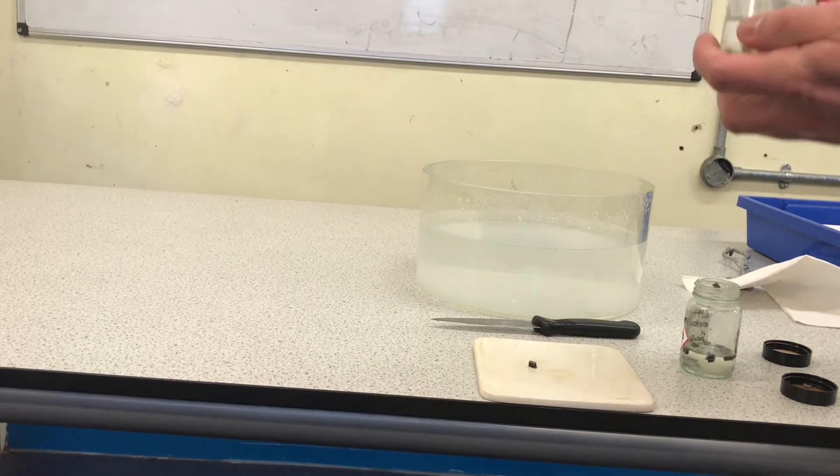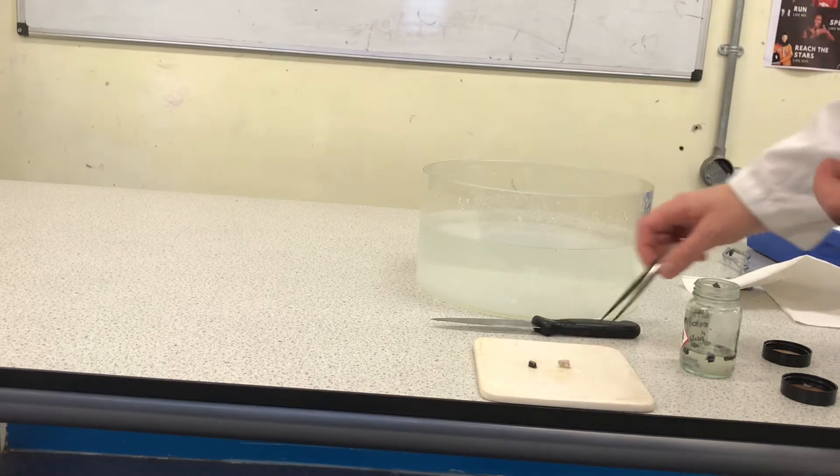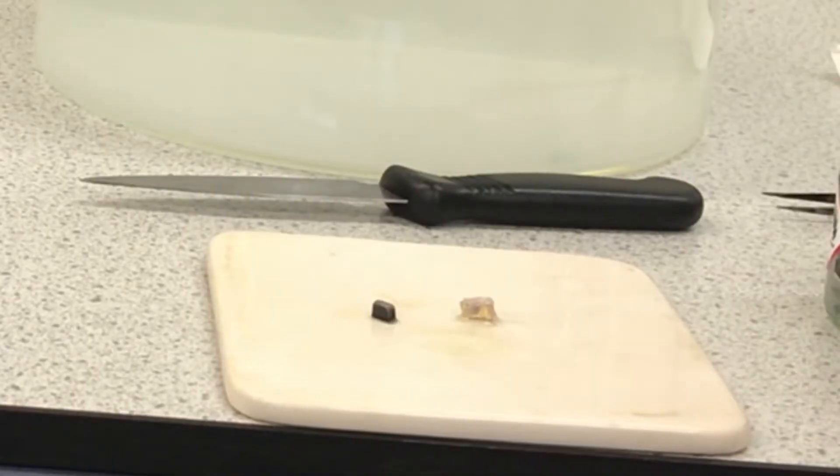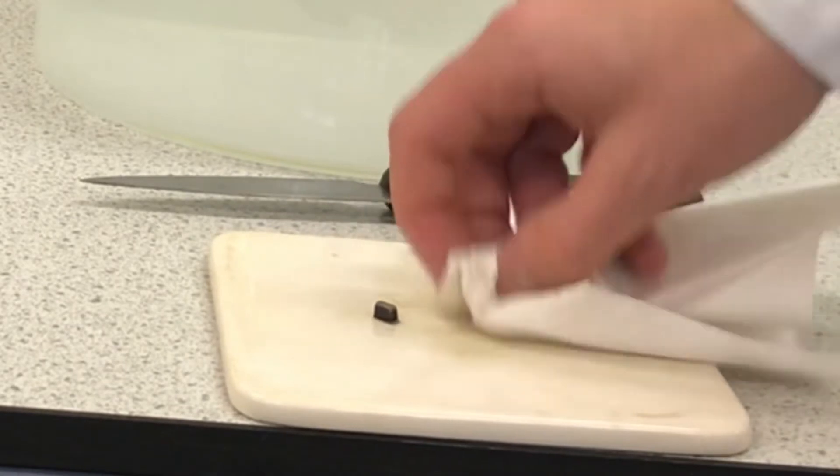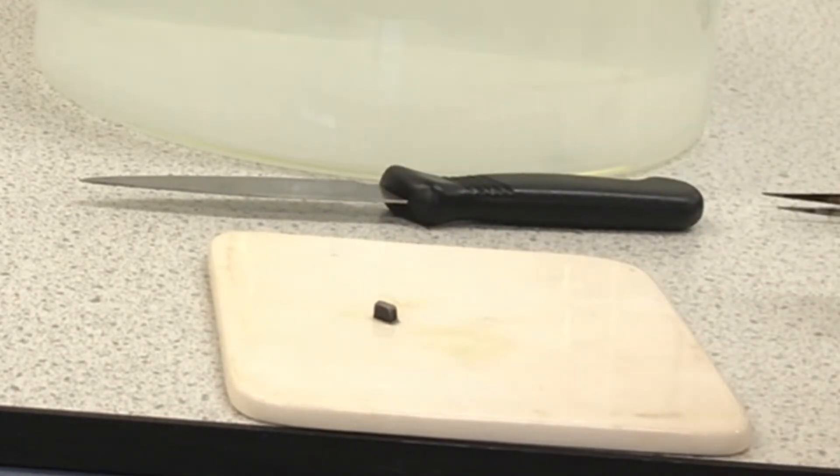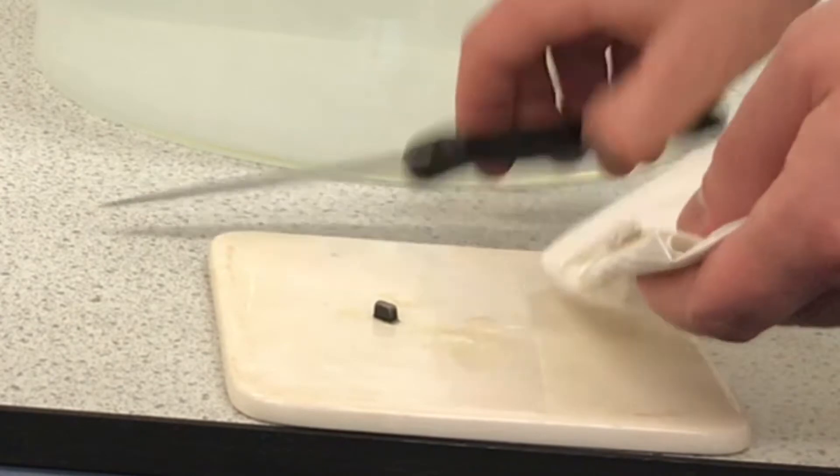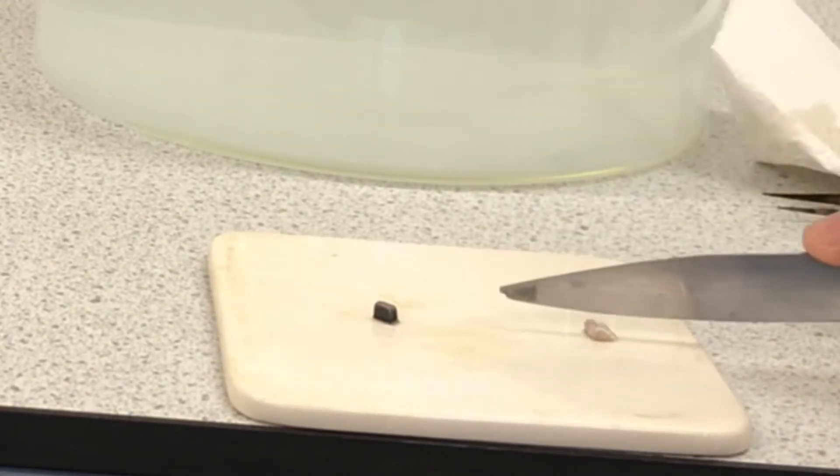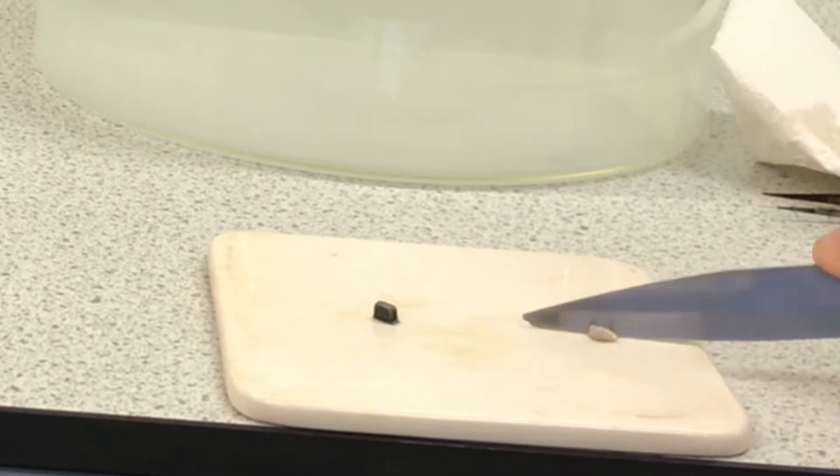I'll remove a piece of sodium with my forceps. Now, I will dry this so that the oil gets off of it. Sodium is also a very soft metal. As you see, I can cut it with a knife.